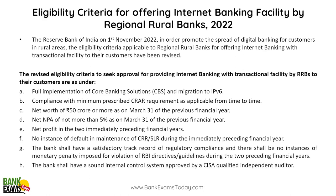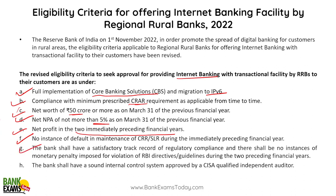Eligibility criteria for offering internet banking facility by a Regional Rural Bank (RRB): full implementation of Core Banking Solutions and migration to IPv6; compliance with minimum CRAR requirement; minimum net worth of 50 crores in the previous financial year; net NPA of not more than 5%; net profit in the two immediately preceding financial years; no default in CRR/SLR maintenance; satisfactory regulatory compliance record; no penalty imposed in the last two years; and a strong internal control system certified by a CISA-qualified independent auditor.